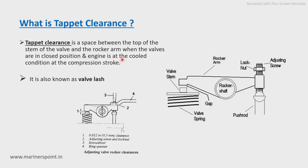The next condition is that the engine must be at cold condition. This is because when the engine is at working temperature, there will be thermal expansion in the working parts — the valve stem will expand. As a result, this gap may decrease and you will not get the actual value of the tappet clearance. So we always measure it when the engine is cold and the valve is in closed position.